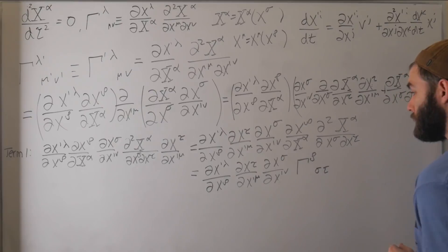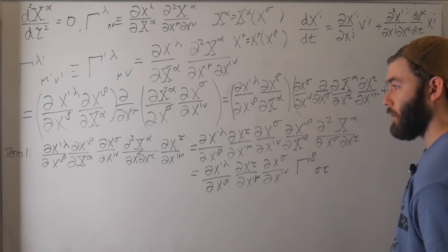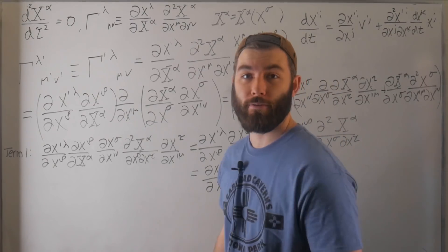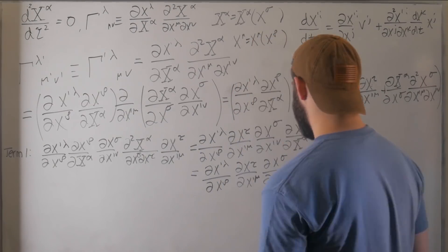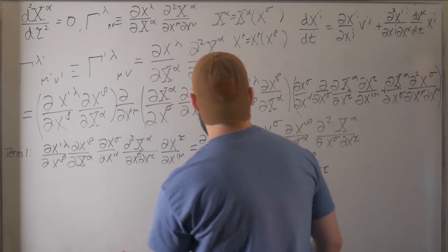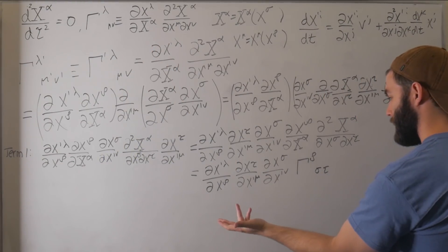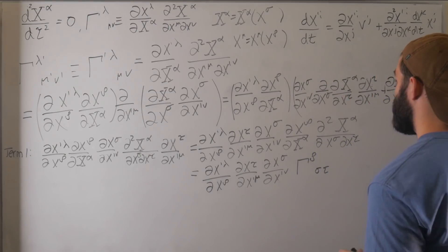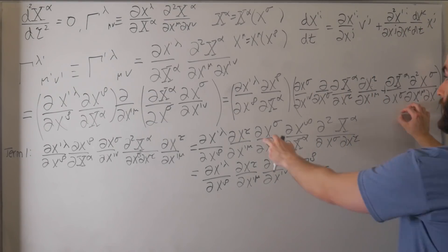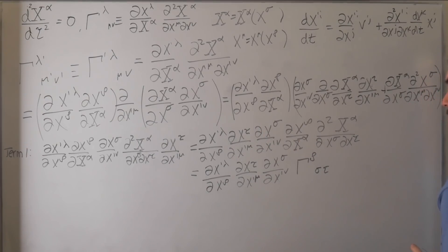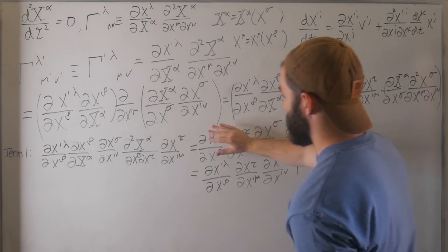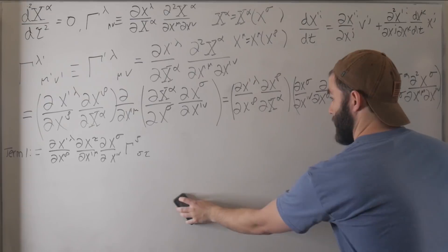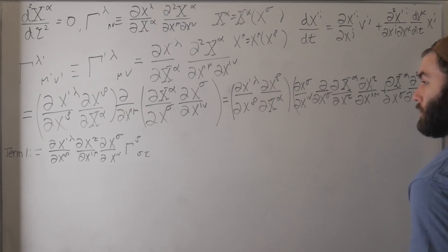And if this was the end of the story, we would have just proven that the affine connection coefficients do transform as third-rank tensor components. But this was just term one — this is the transformation rule for a third-rank tensor, with the unprimed component and three transformation coefficients. But we also have to deal with term two, the second term.